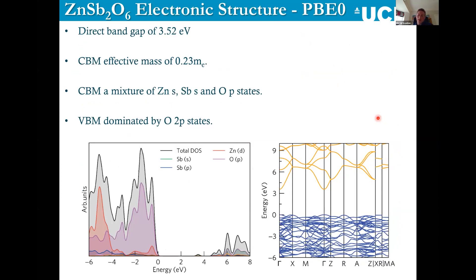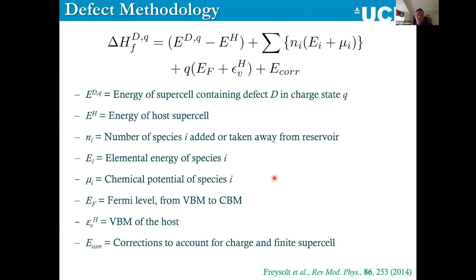We calculated the electronic structure of ZnSb₂O₆ and immediately saw a lovely dispersive conduction band minimum, a large separation between the CBM and the lowest conduction band, and a very low conduction band effective mass of 0.23. Everything we see here shows that this material should be a good transparent conducting oxide.